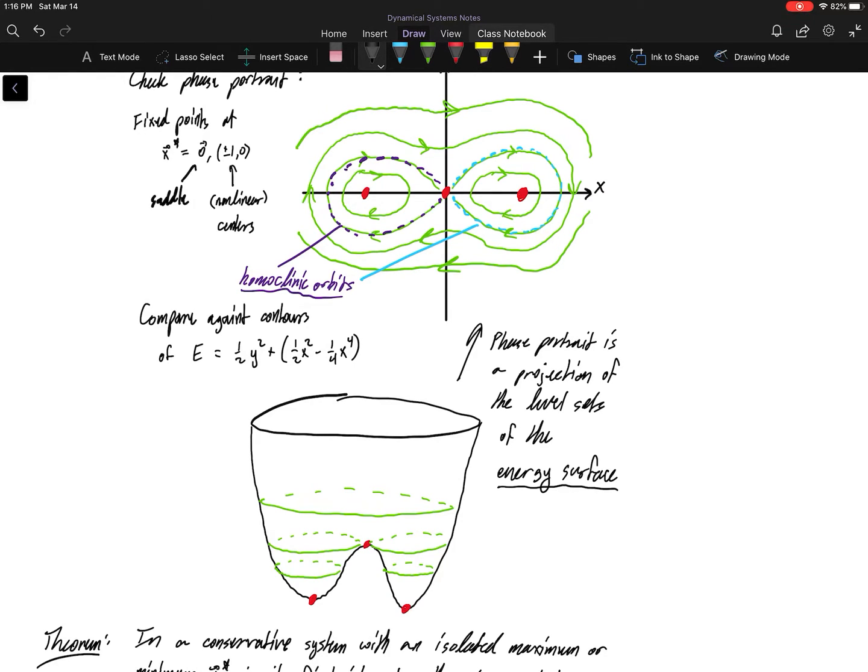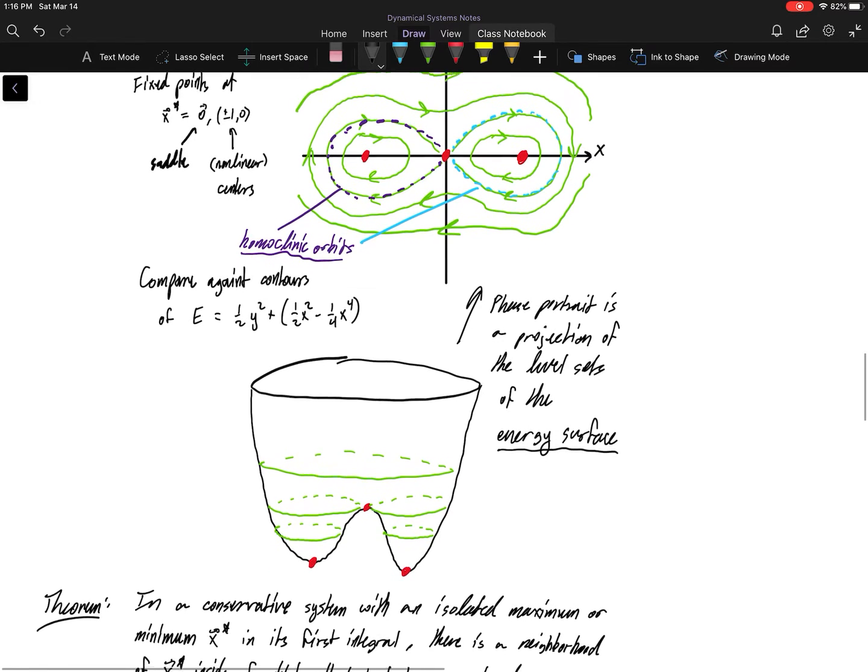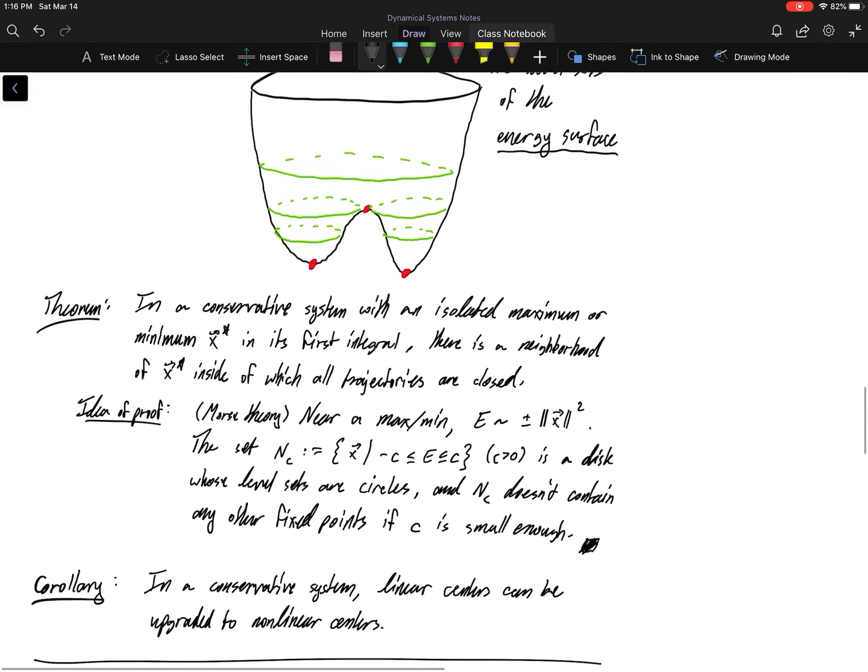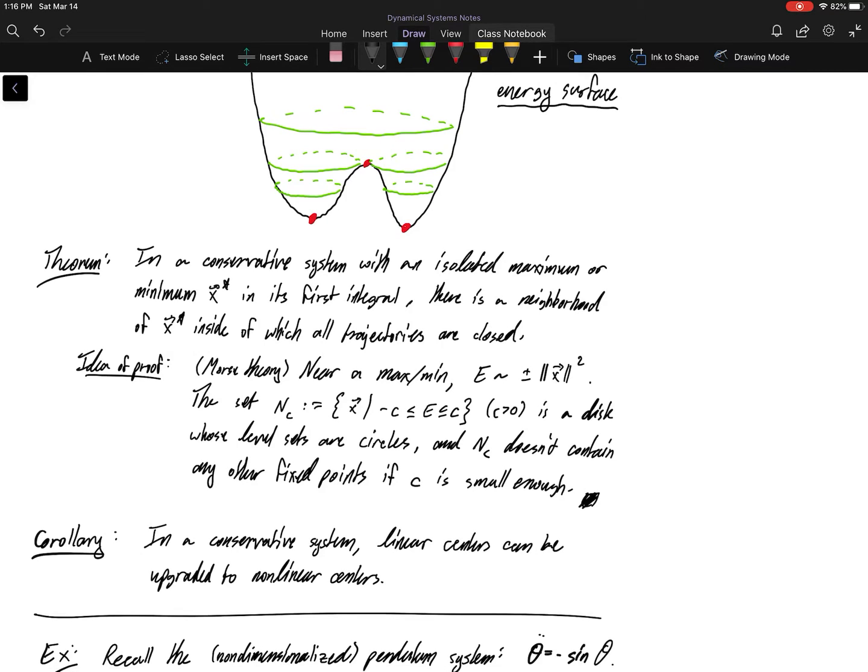So that would mean that our solutions have to close up. Our contours have to close up near the fixed point, which means that these linear centers are not affected by non-linear changes that are further away from them. So we can go ahead and upgrade any linear center to a non-linear center, provided we have an energy function or a first integral or a conserved quantity, whatever the name you want to give it.